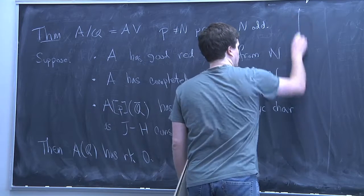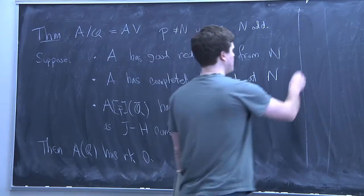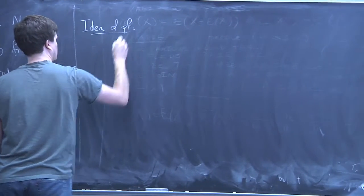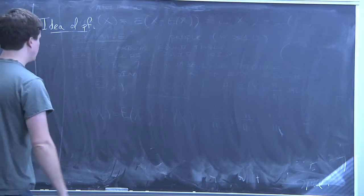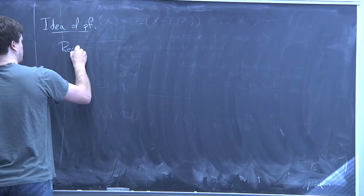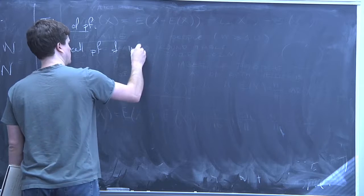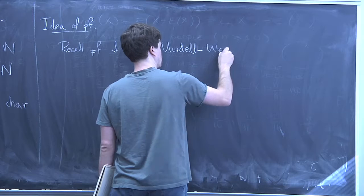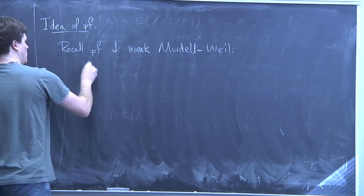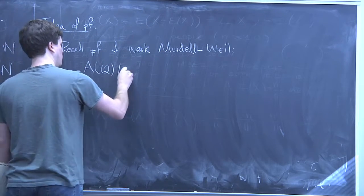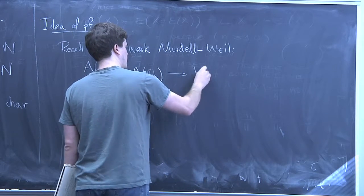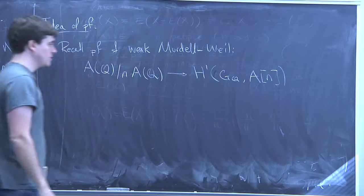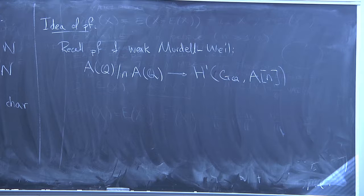Before we go into the details, let me tell you the idea of the proof. Recall the proof of the weak Mordell-Weil theorem. We shove it and get an injection from A(Q) mod N·A(Q) into the first Galois cohomology group of the torsion — so the Kummer sequence of A gives you some injection like this.